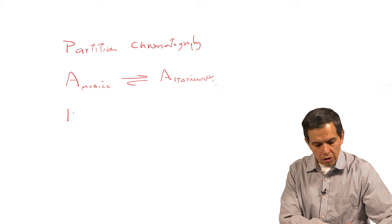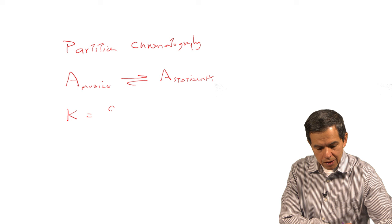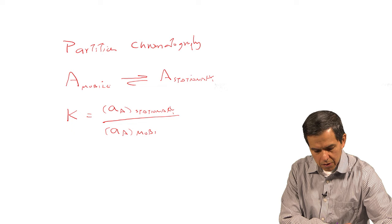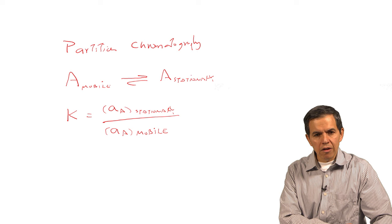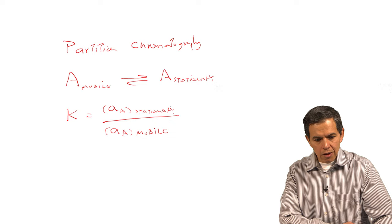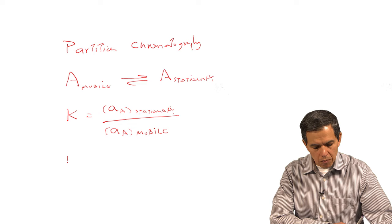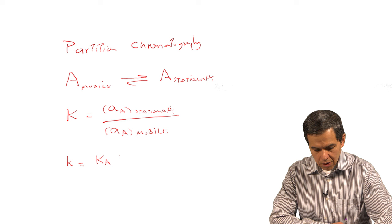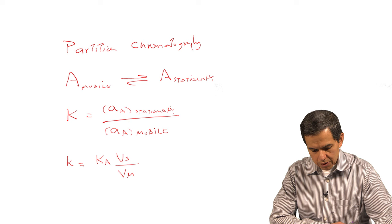Mathematically, this equilibrium can be described by a distribution constant, K, calculated as the activity of A in the stationary phase divided by the activity of A in the mobile phase. This distribution constant is usually not explicitly calculated in chromatography. However, a related term is called the retention factor, represented by small k, which is calculated as the distribution constant times the volume of the stationary phase divided by the volume of the mobile phase.